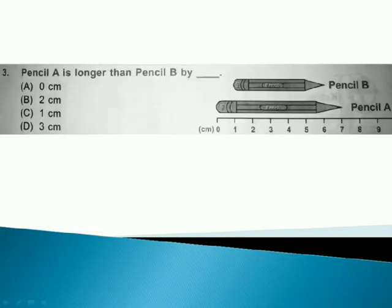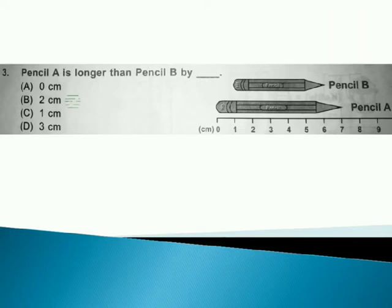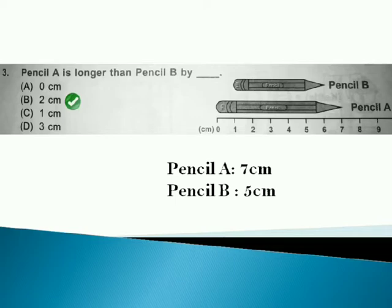Pencil A is longer than pencil B by... Answer is option B because pencil A is 7 centimeters long and pencil B is 5 centimeters long. So difference is 2 centimeters.